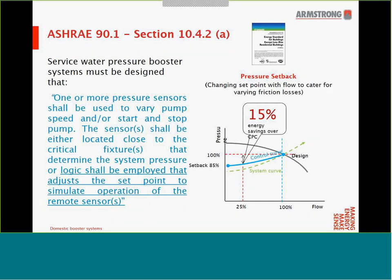Traditionally, all boosters come with one sensor at the suction side and one at the discharge side. Section 10.4.2A calls for feedback control by placing the sensor at the critical fixture at the top of the building, factoring in actual friction losses rather than hypothetical calculated ones. ASHRAE acknowledges it's not always feasible to run wires to place the pressure sensor at the critical fixture at the top of the building due to the cost of running conduits. This clause also allows software logic to simulate the change in friction losses as flow changes — called pressure setback — a very common feature in booster packages.